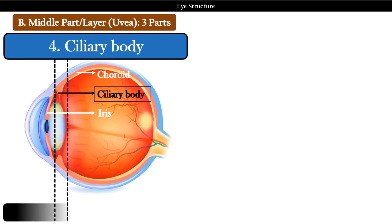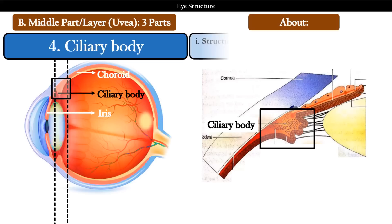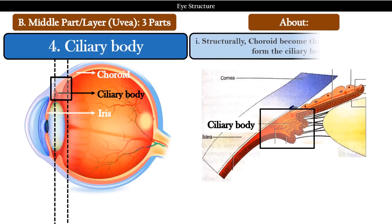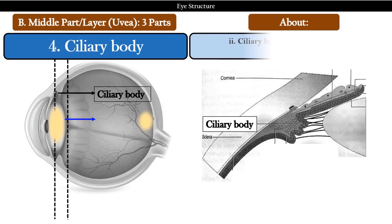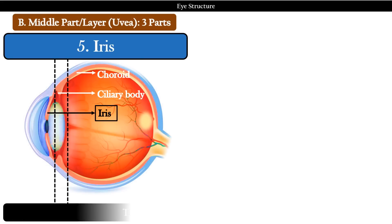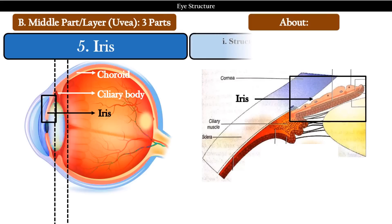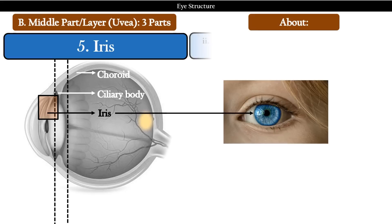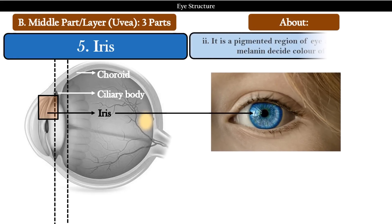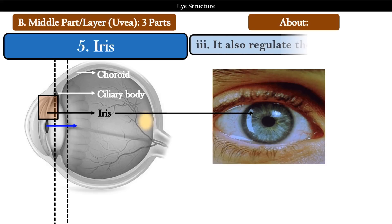The next part is the ciliary body. Two important points about the ciliary body are: first, structurally, the choroid becomes thick toward the front to form the ciliary body. Second, the ciliary body's main function is to hold the lens. The last part is the iris. Three important things about iris are: first, structurally, iris is the extension of the ciliary body itself. Second, it is a pigmented region of the eye, and the amount of melanin decides the color of the iris. Third, it also regulates the size of the pupil.